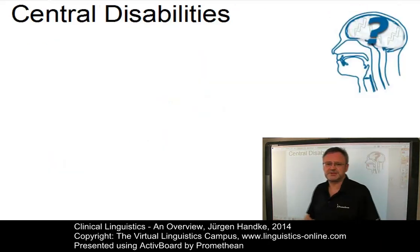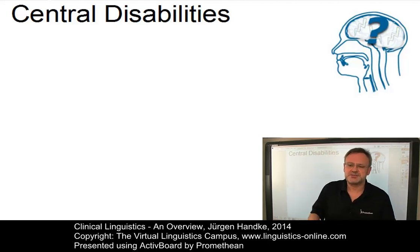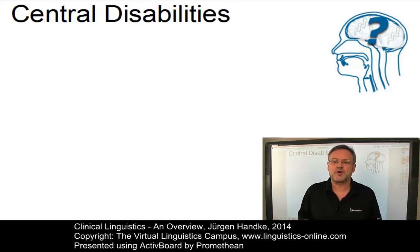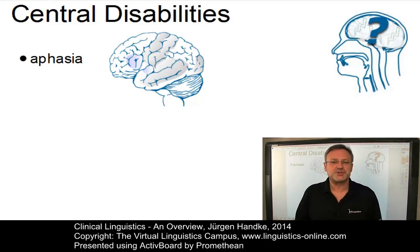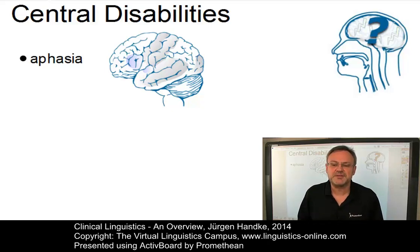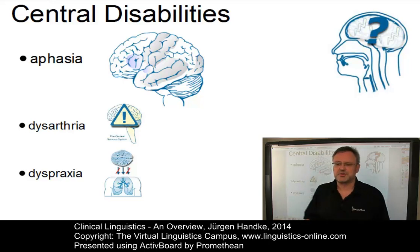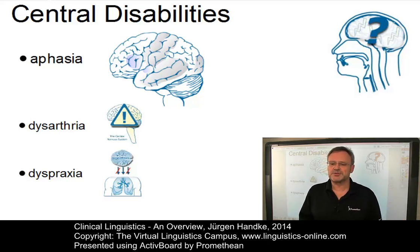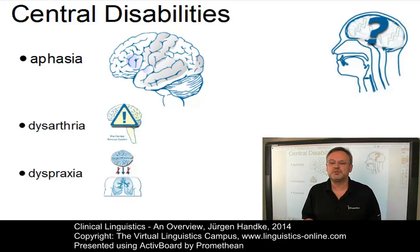Let's now move on to the central disabilities. Disorders of language which originate in the central nervous system are called central disabilities. There are central disabilities where the linguistic problems appear to be the result of organic pathology in specific centres of the brain — this disorder is referred to as aphasia, a disorder where language is the primary or the only aspect of behaviour affected. This category should be distinguished from other neurological problems such as dysarthria, where the tongue would be quite mobile although not necessarily under control, and dyspraxia, where a patient might have considerable difficulty in moving his tongue around his mouth.